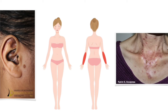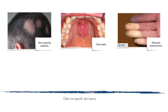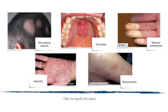Other cutaneous findings that are not specific to LE include non-scarring alopecia, mouth ulcers, Raynaud's phenomenon, vasculitis or vasculopathy, and bullous systemic lupus erythematosus. These often herald an SLE flare.